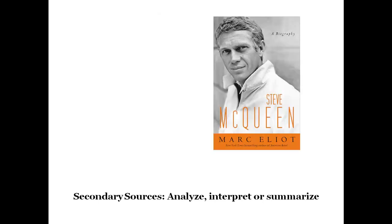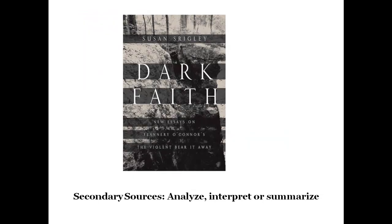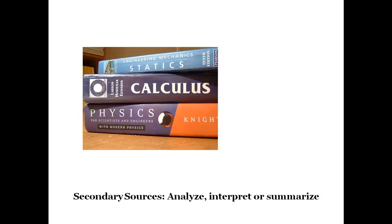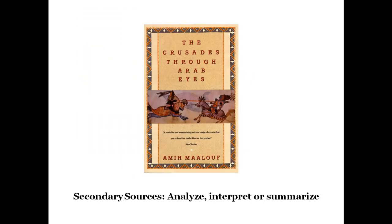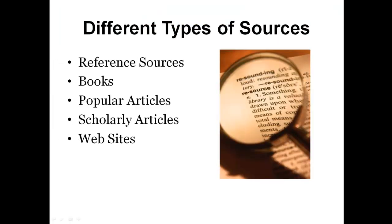Secondary sources analyze, interpret, or summarize. Examples of secondary sources include biographies, critical analyses, literary criticism, textbooks, and articles or books written by non-participants. You can find information everywhere, but you should only use the best resources for your papers or projects. Knowing the strengths and weaknesses of different sources can help you choose the most appropriate and useful information. Here are some of the most common types of sources.